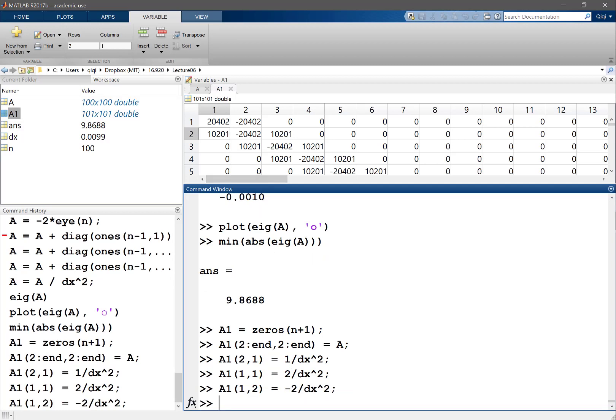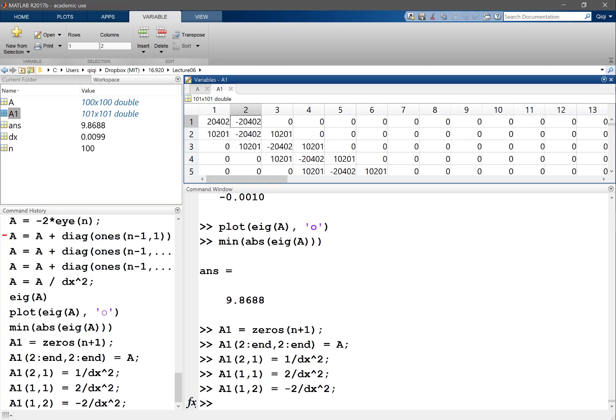So the only difference actually from this matrix and the previous one is this single entry, right? It's the 1, 2 entry. Instead of just the 1 over delta x squared, we have 2, we have minus 2 times delta x squared, okay?